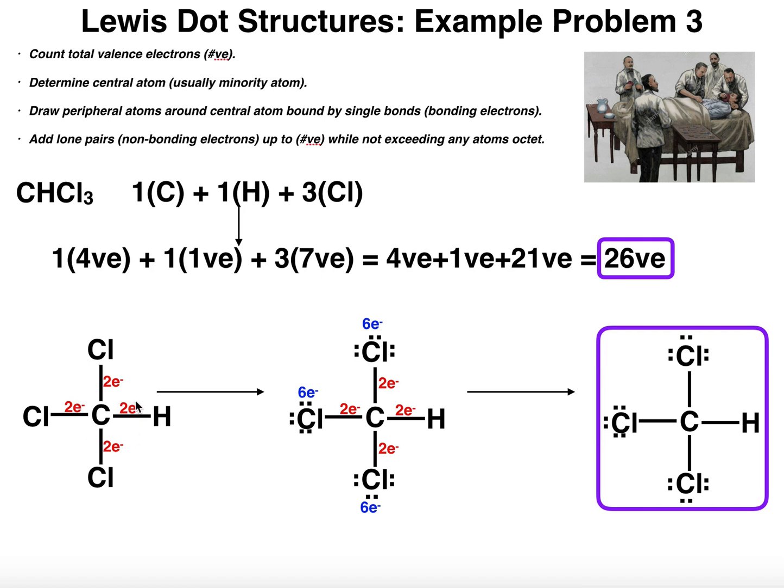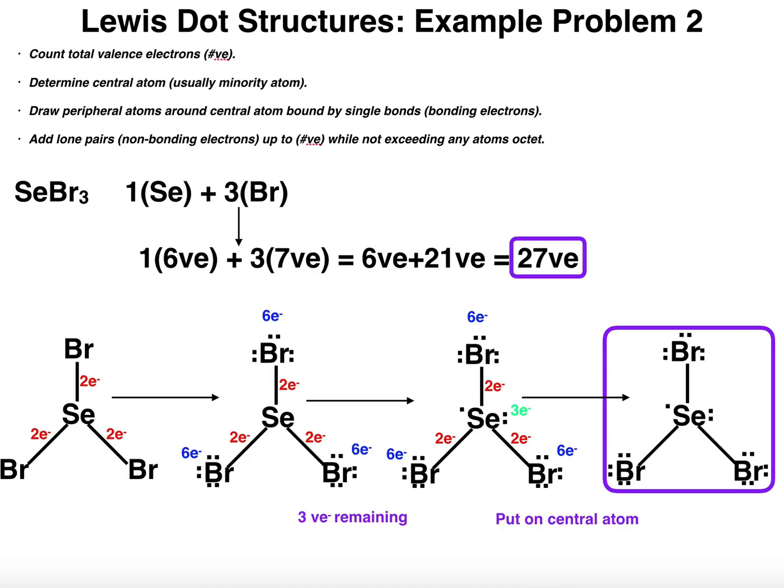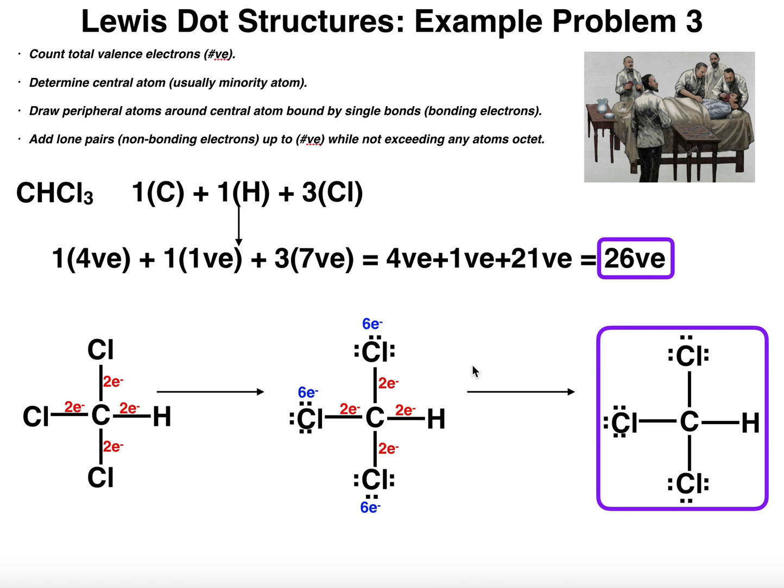So all I need to do now is add lone pairs, or non-bonding electrons, potentially up to this maximum number of valence electrons, while not exceeding the octet on any atom. On each of these chlorines, they're going to be very similar to the bromines and fluorines from previous videos. The chlorines are each going to get three lone pairs, or six non-bonding electrons. So this chlorine at the top here is one, two, three, four, five, and six.